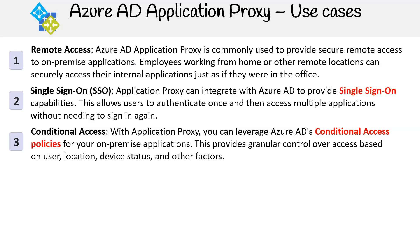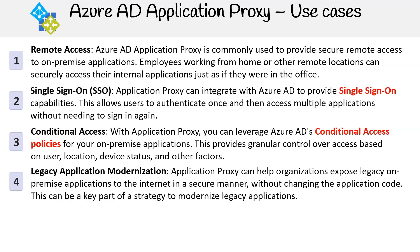Conditional access: with Application Proxy, you can leverage Azure AD's conditional access policies for your on-premises applications. This provides granular control over access based on user location, device status, and other factors. Legacy application modernization: Application Proxy can help organizations expose legacy on-premises applications to the internet in a secure manner without changing the application code. This can be a key part of a strategy to modernize legacy applications.